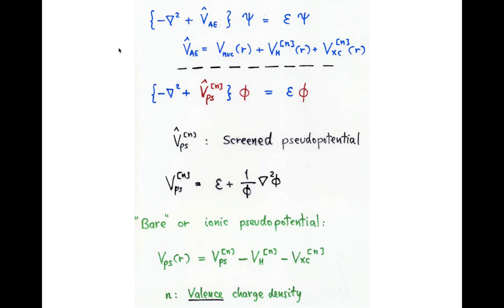Now, to conclude the procedure, we need to find the pseudo potential itself. And the way is to compare this equation, which gives the actual wave function, the all-electron wave function, using the all-electron potential, compared to this other equation,